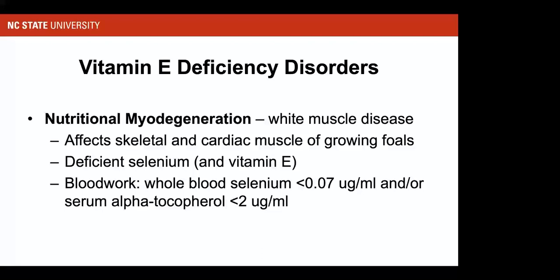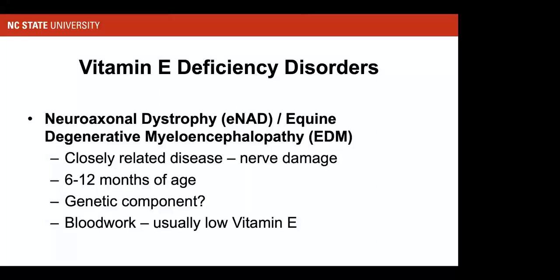Foals with white muscle disease typically show relatively low whole-blood selenium and/or low alpha-tocopherol. However, many of these horses don't always respond to dietary treatment, particularly because they are young and this is the first muscle they are developing. If not formed properly, it may result in a lifelong condition or euthanasia.